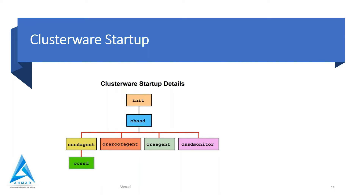The third process is ora agent, which is responsible for starting processes that do not need to run as root. Whatever processes whose owners are not root are started by ora agent. Ora agent basically extends support for Oracle-specific requirements. Whenever a FAN event occurs, this process runs some callout scripts. This process was known as RACG in 11.1, but after that its name changed to ora agent - don't be confused when you hear about RACG.